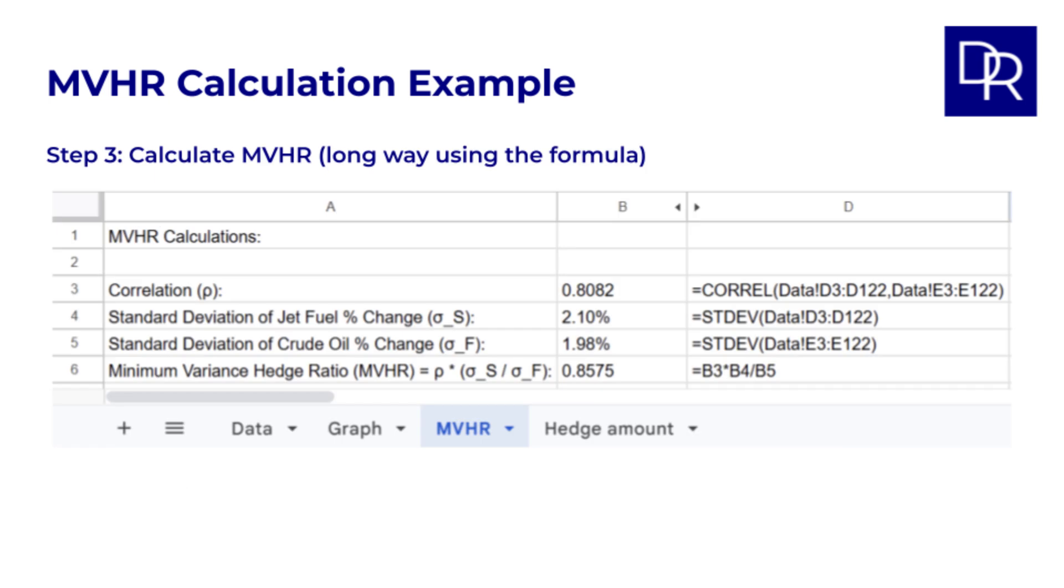Now, in step three, we calculate the MVHR. First, we'll do this a long way, and I'll show a quicker way in a minute. Now that we have the percentage change data, we can calculate the inputs to the formula for MVHR. In the calculations tab, I use the Correl function on the price changes to get the correlation rho. We see that we get 0.8082 for the correlation. So pretty close to 1, which is good. This shows the prices move quite closely together. We use standard dev to get sigma s and sigma f. Standard deviations of the jet fuel spot price and the crude oil futures price respectively. We get 2.10% and 1.98%. But the volatilities are very close, which is another good sign that this could be a good hedge. So, we get for the minimum variance hedge ratio a value of 0.8575.